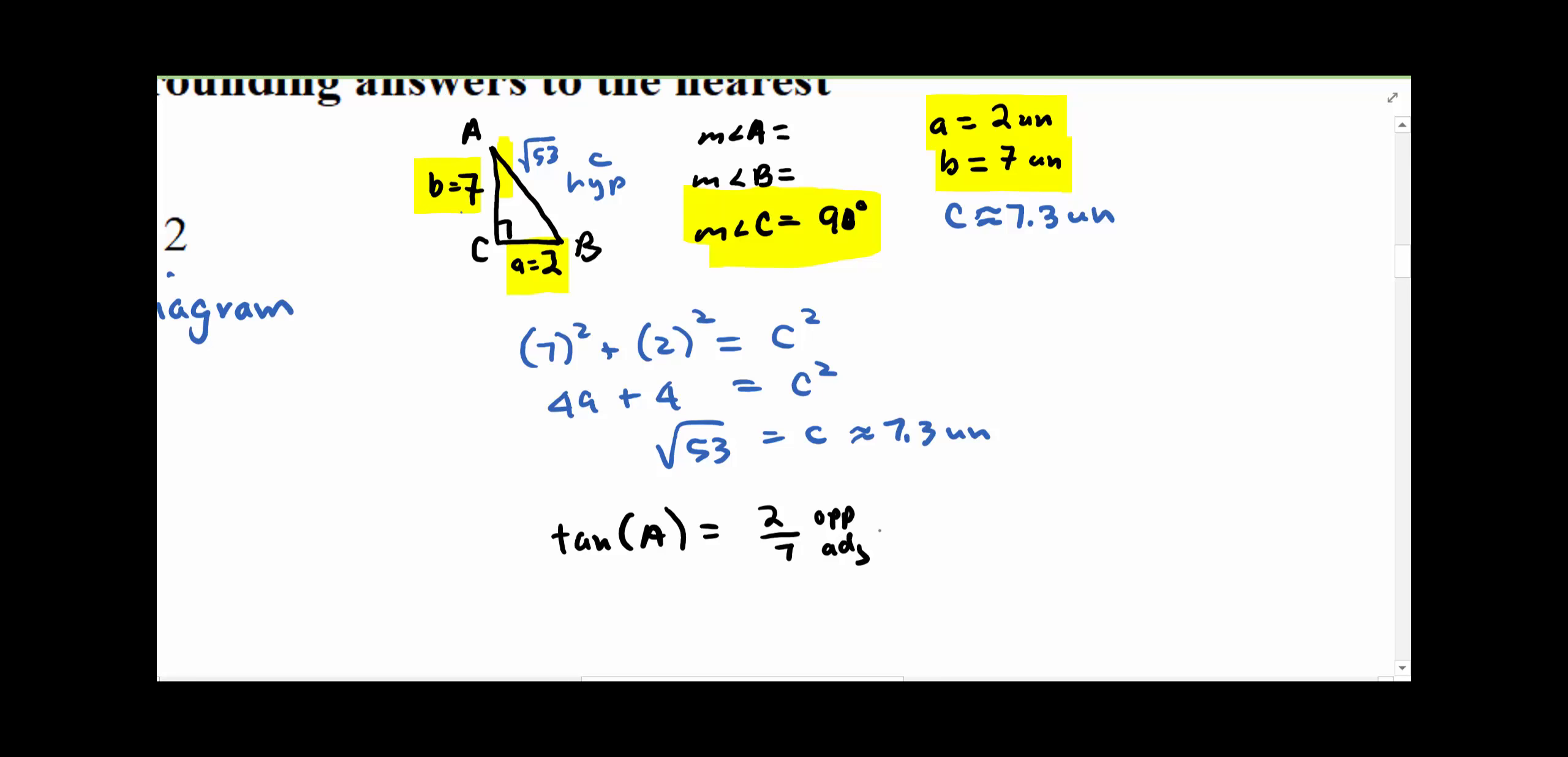That cancels that out. So A is equal, and you're going to type in 2nd tangent 2 divide 7, so make sure your calculator is in degree mode...